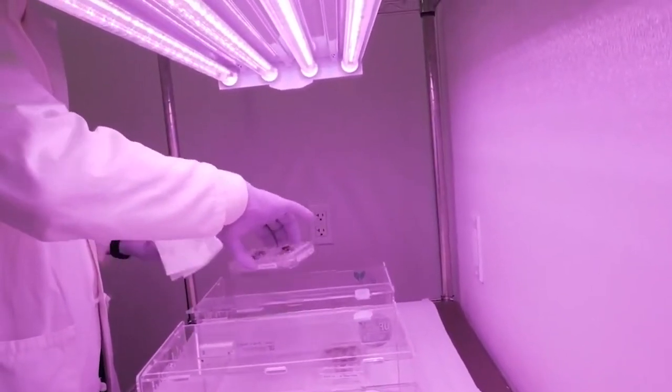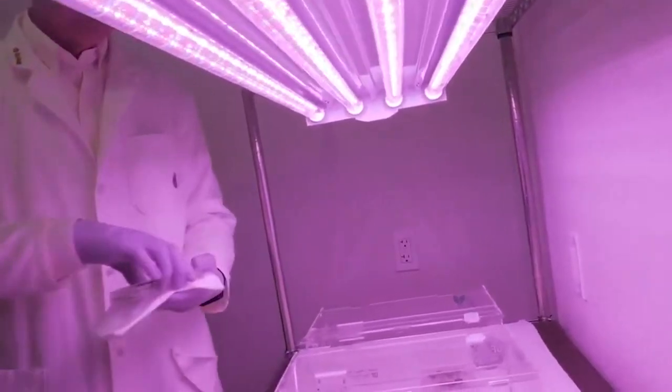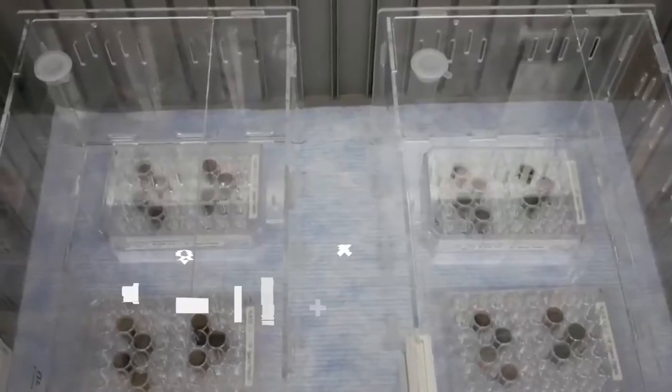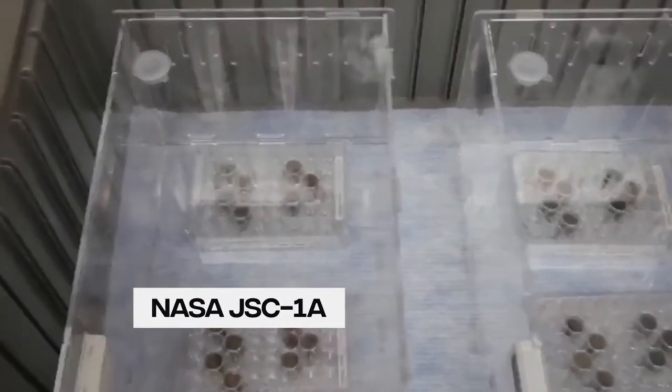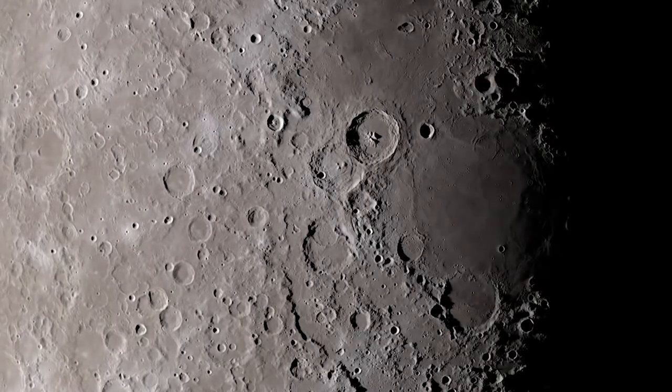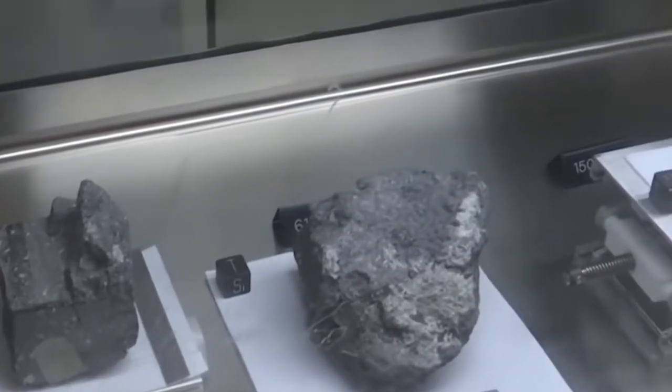For comparison, the scientists grew the Thale Cress in a form of soil derived from volcanic ashes found on Earth, known as NASA JSC-1A, which is granular and full of abrasive glass fragments, and was designed to replicate lunar soil, which is powdery and full of abrasive glass shards.